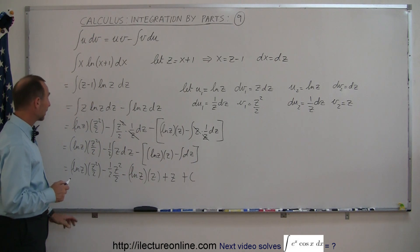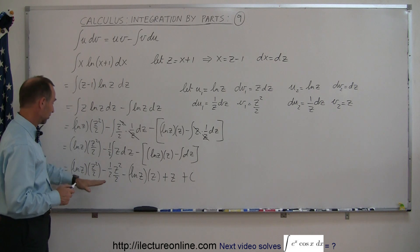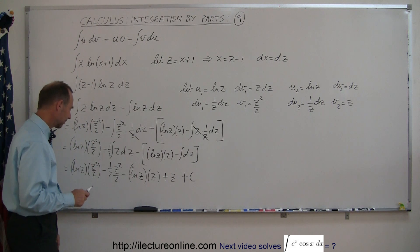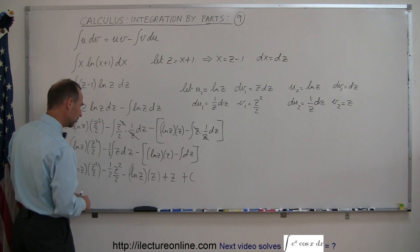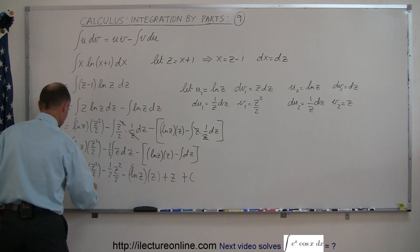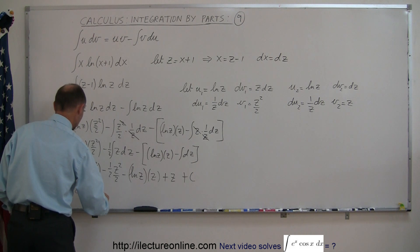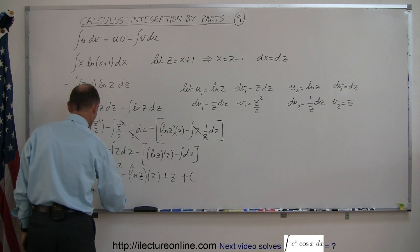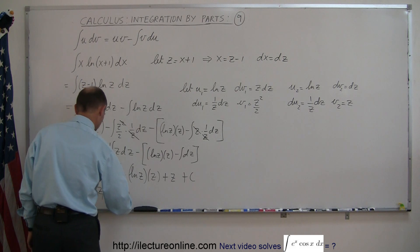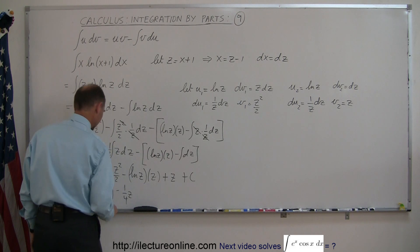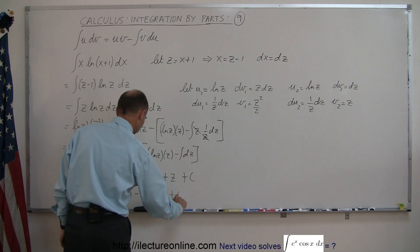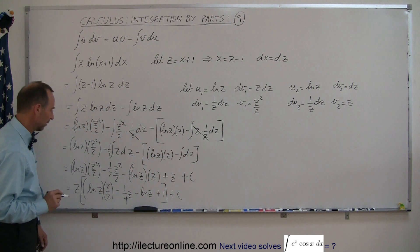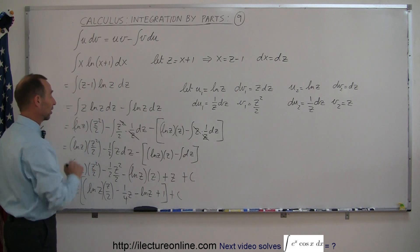We're not quite done yet, because our problem was in terms of x but our solution is in terms of z, so we have to substitute back in. We can factor out a z, so this can be written as z times the natural log of z times z over 2, minus 1 quarter z, minus the natural log of z, plus 1, plus a constant of integration. Now we substitute z equals x plus 1.